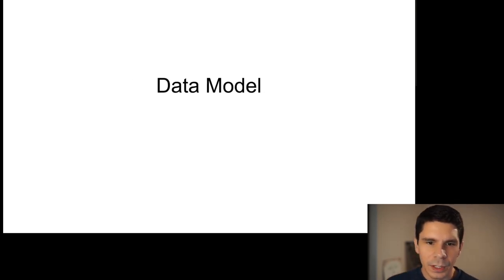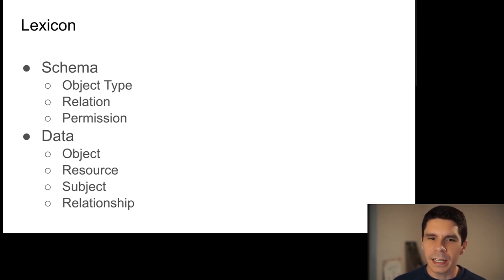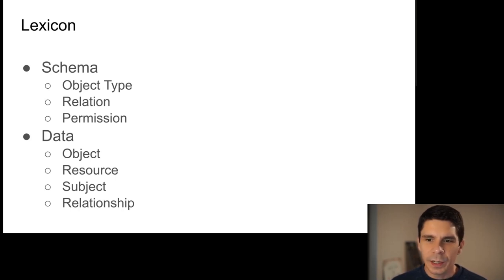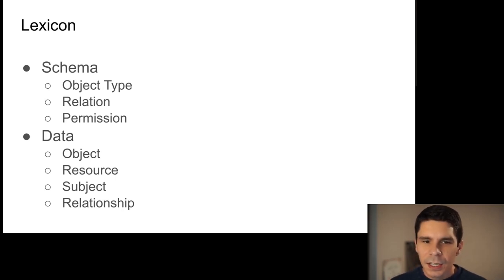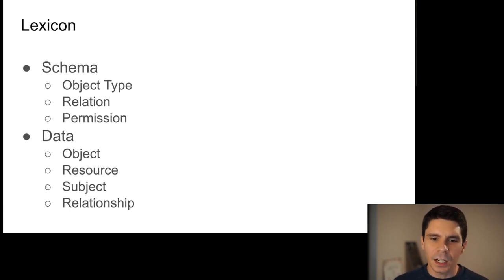Here's our data model. We have an overarching schema which defines the types of objects you can read and write, the relations which define how data can relate to other data, and permissions which are how we interpret that data. The data itself includes objects — which are like nouns — resources on the left-hand side of a relationship, subjects which are usually users, and the relationships themselves. You can think of the schema like a relational database schema.